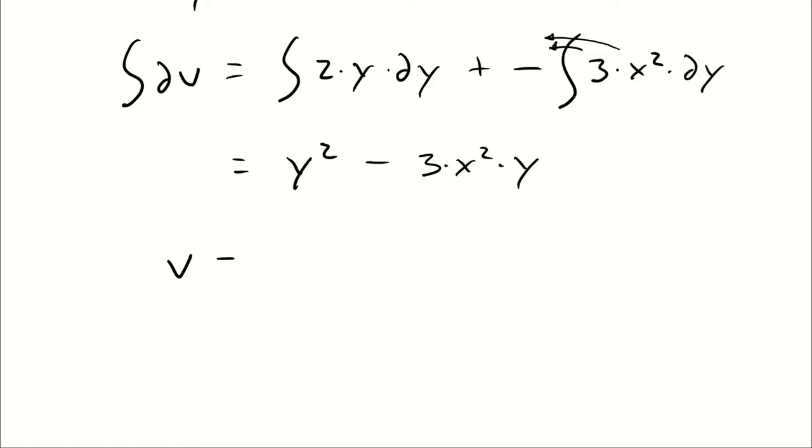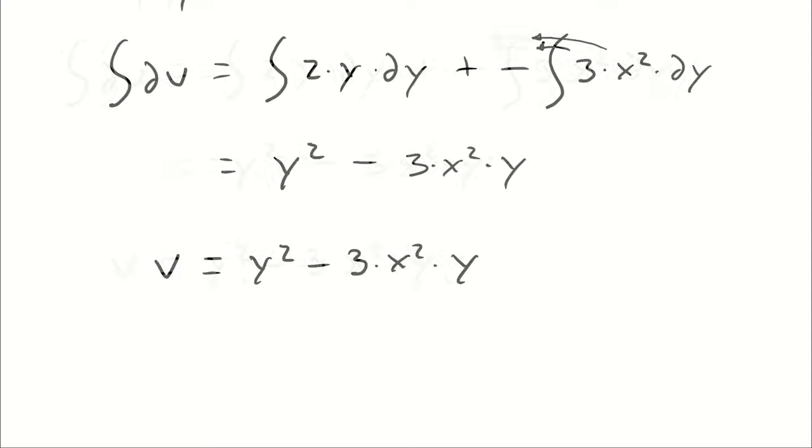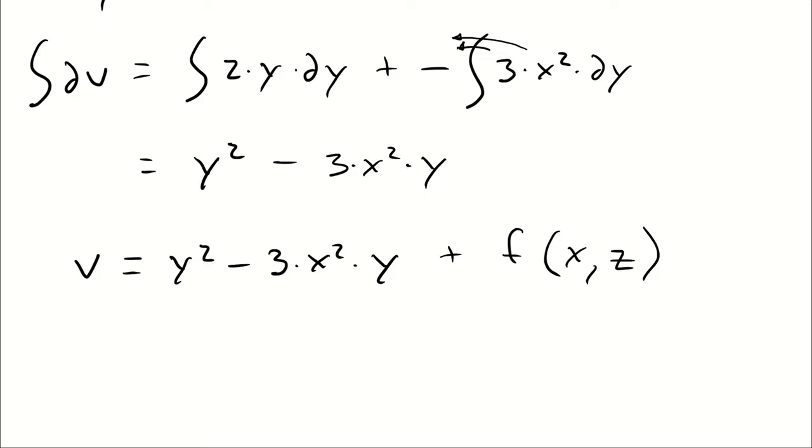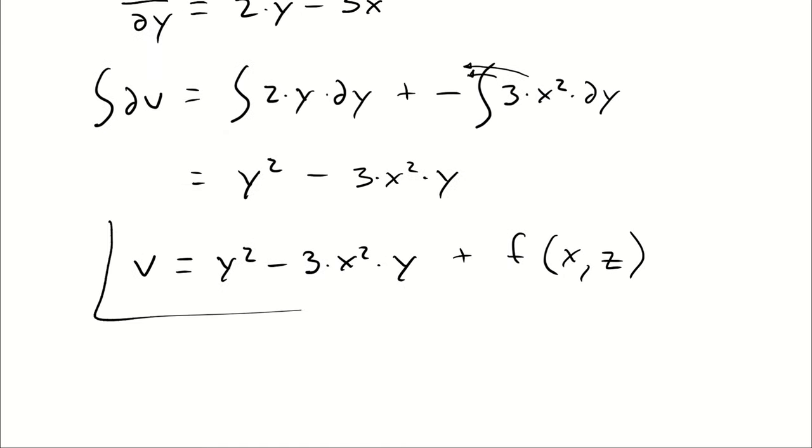So the answer to the question is v equals y squared minus 3x squared y, plus theoretically we could have a function of x and z as well, because those would appear as constants.